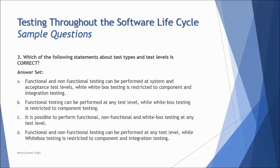Question three: which of the following statements about test types and test levels is correct? We are talking about white box, black box, and test levels such as component, integration, and system. Option A states functional and non-functional testing can be performed at system and acceptance test level, while white box testing is restricted to component and integration. The second part is fine but the first part is wrong. Option C states it is possible to perform functional, non-functional, and white box testing at any test level — non-functional is not conducted at just any test level, it is limited to specific non-functional levels.